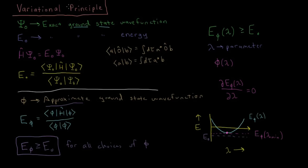So that's the variational principle, and we're going to do some examples with this and look at how it helps us for some quantum mechanical systems which we cannot solve exactly.